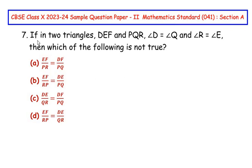triangles chapter. If in two triangles DEF and PQR, angle D is equal to angle Q and angle R is equal to angle E, then which of the following is not true? Let us try to understand the question